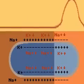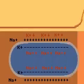After the impulse has passed, potassium ions leave the cell, restoring the negative charge within the cell and the positive charge outside it.